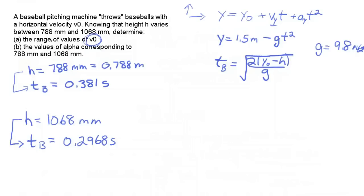Now, the question was, what's the range of values of v0? That's the initial x velocity. And so we're working on the x component now. And we can write down that x equals x0, the initial position, plus v sub x times the time, plus the acceleration in the x direction, t squared.